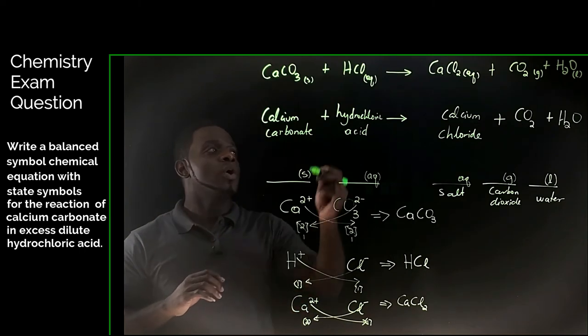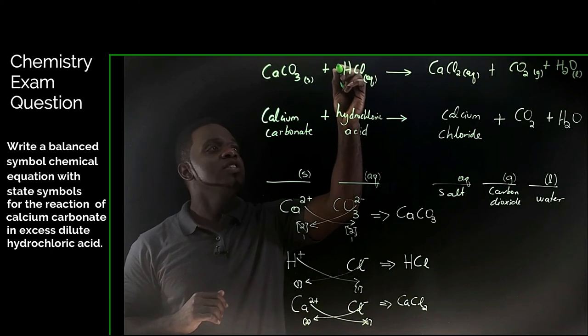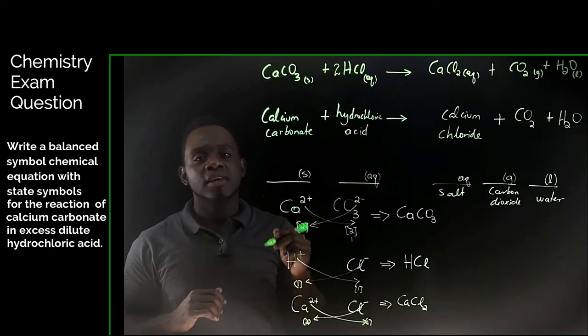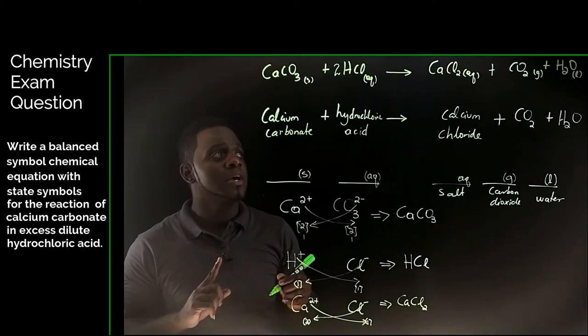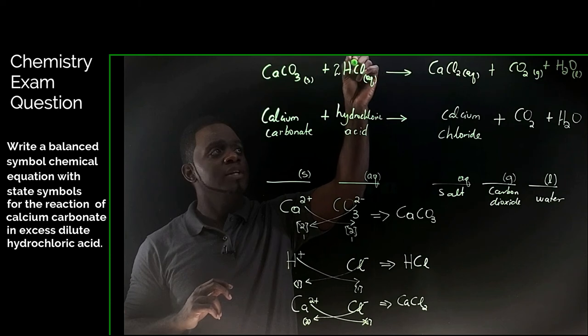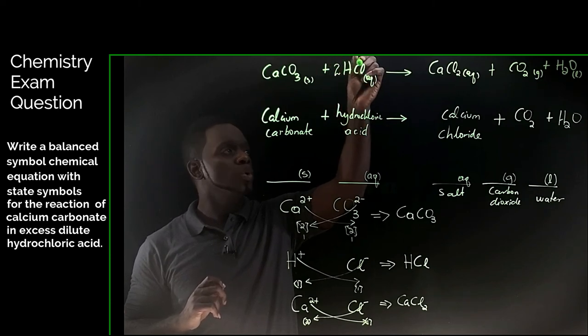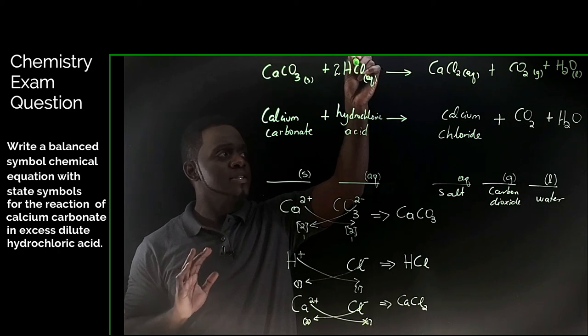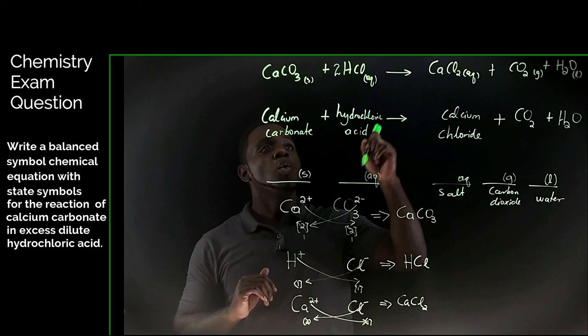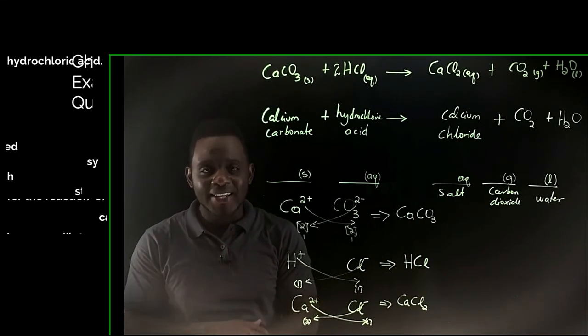We have 1 hydrogen on the left hand side and 2 on the right, which means we need to put a 2 here to balance the amount of hydrogen atoms in the equation. But this 2 here also affects this chlorine here. So that's now 2 chloride ions on the left hand side. And guess what? We also have 2 on the right hand side, which means our equation is completely balanced.